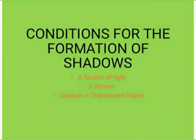Now, what are the conditions for the formation of shadows? First is a source of light, which is necessary for shadow formation. Second is a screen — on the screen you are able to see the formation of the shadow of an object. Third is the object, either an opaque object or a translucent object.